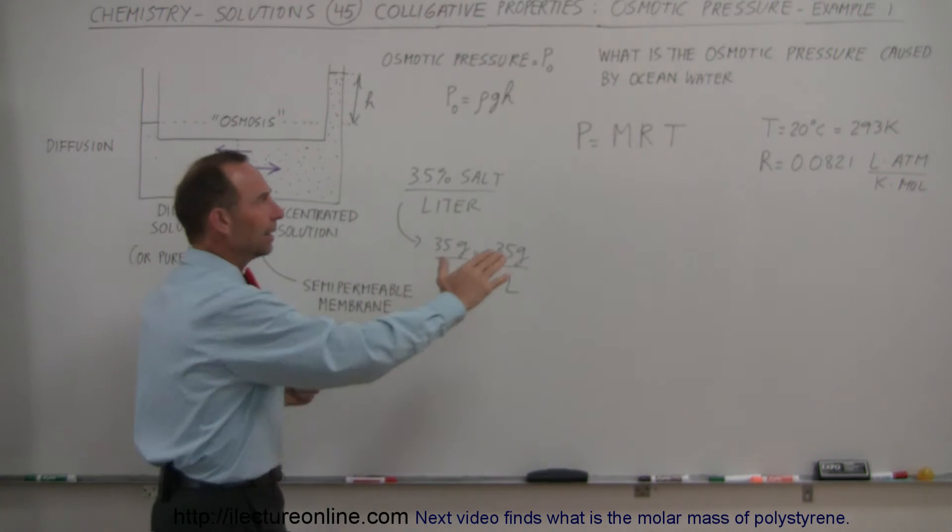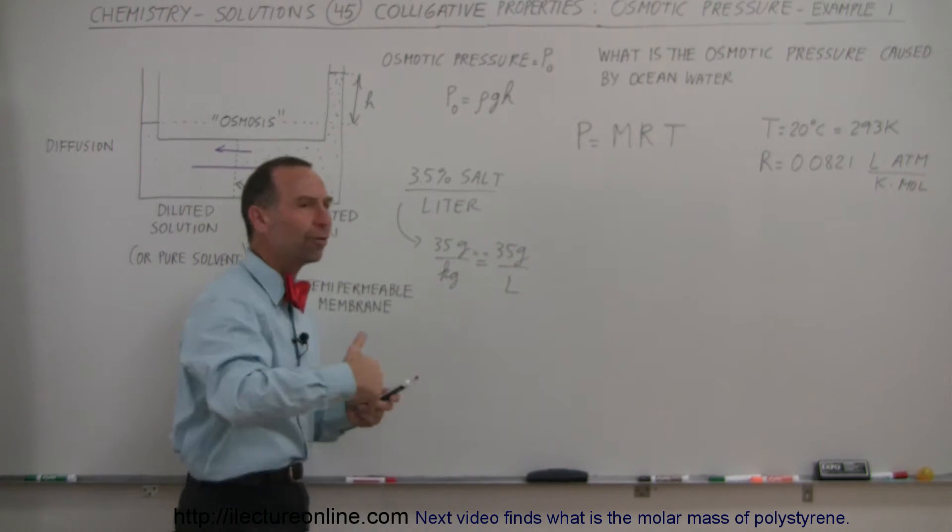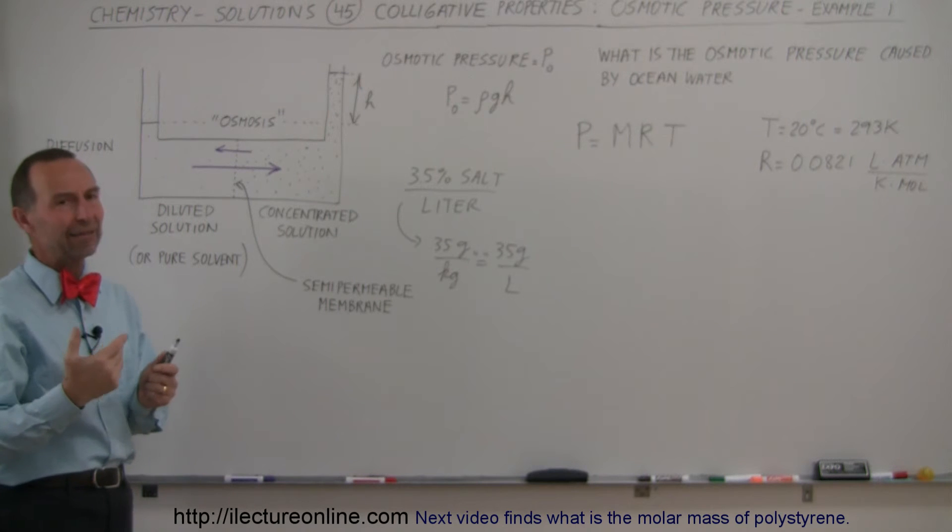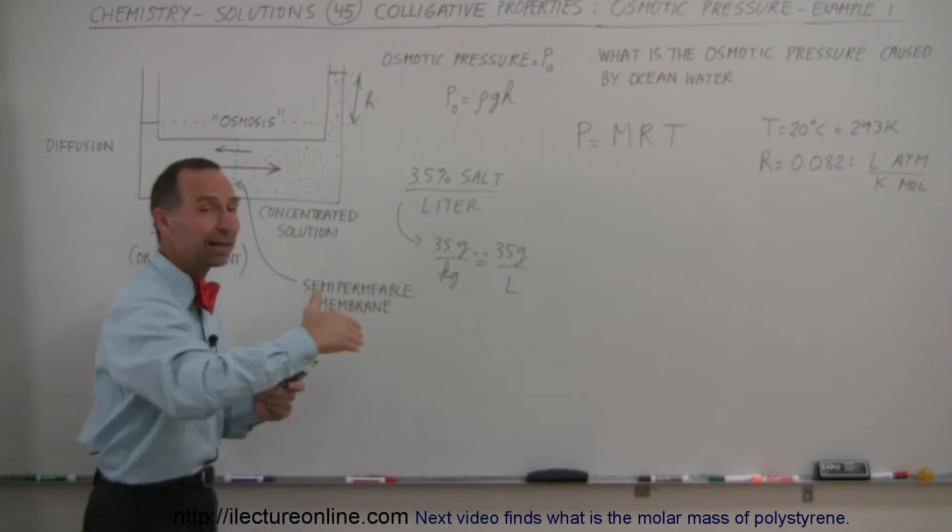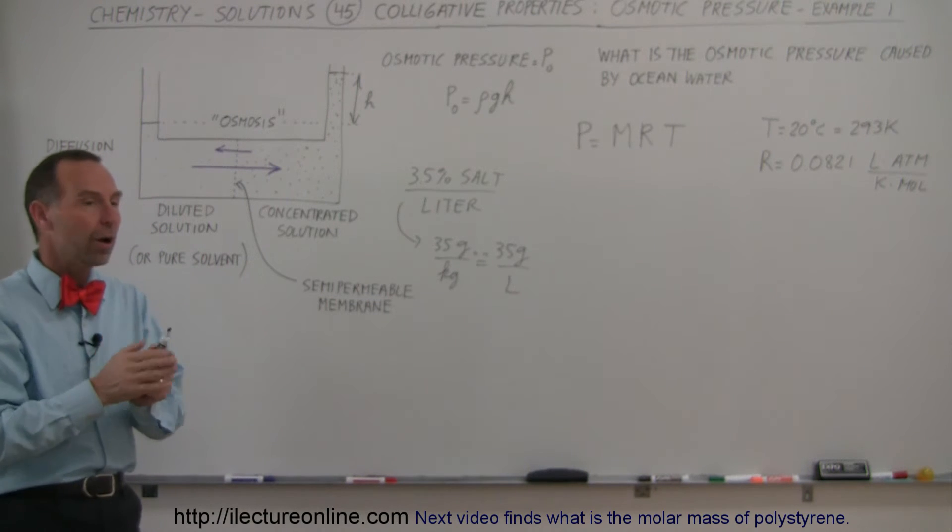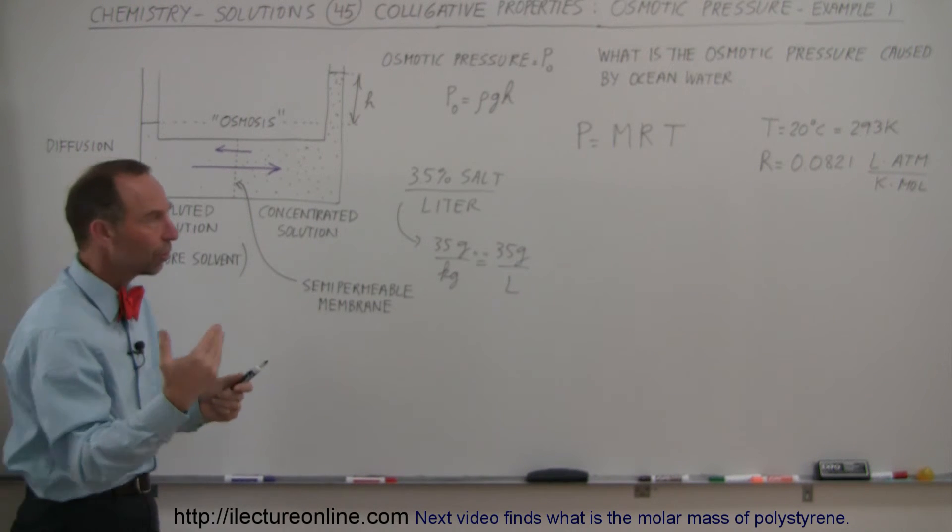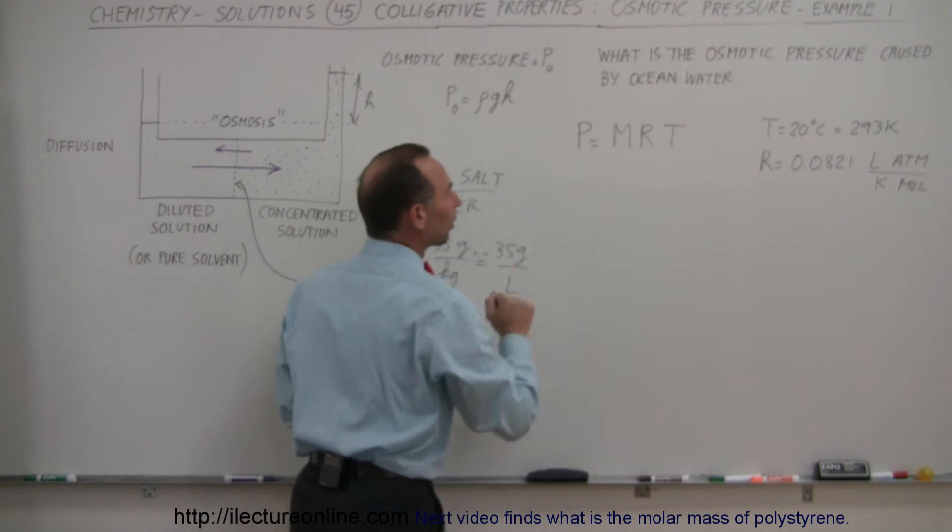And it's, matter of fact, the M here stands for the number of ions in the solution. So we basically have to find out how many moles of salt this represents, and then multiply times two to get the total number of ions in solution, which is the molarity that will determine the osmotic pressure.